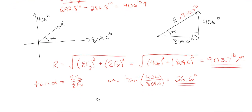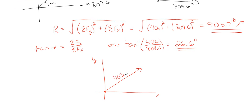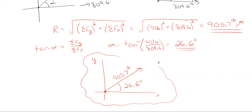For these types of problems it's best to redraw a simple free body diagram and show your resultant force on it. There's my x, there's my y, there's my origin point. My resultant is going up and to the right, with a magnitude of 905.7 pounds, and it is off the horizontal x-axis at 26.6 degrees. That is your final answer — and that's how you use the rectangular method to solve for resultant forces between multiple components.